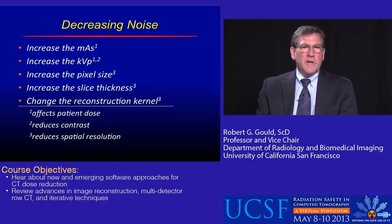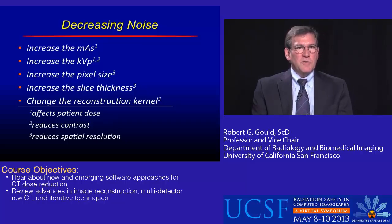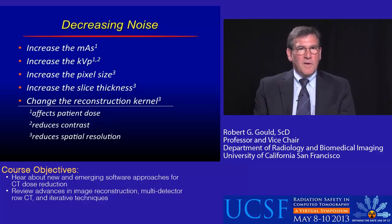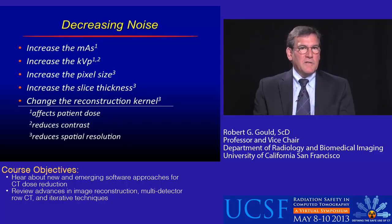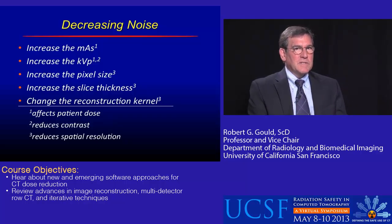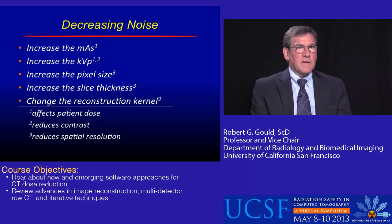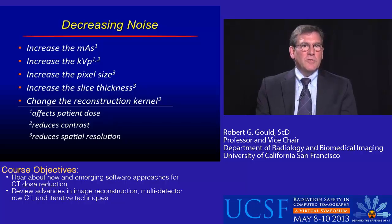Increasing kVp also has the consequence of reducing the contrast. We can increase the pixel size, all other factors being equal, which has the effect of reducing spatial resolution. We can change the slice thickness, which also increases or decreases spatial resolution.